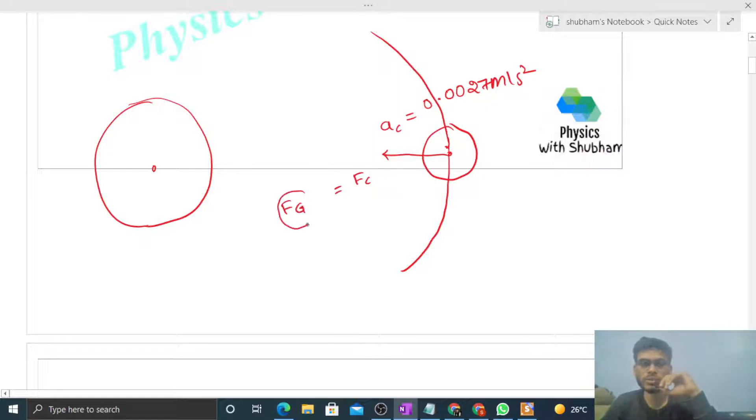Fg is the gravitational force of attraction by the earth on the moon, which in magnitude we know is capital G times mass of the earth times mass of the moon divided by whatever is the distance between the center of the moon and the center of the earth. Let's call it D, so D squared. That is equal to Fc, the centripetal force on the moon.